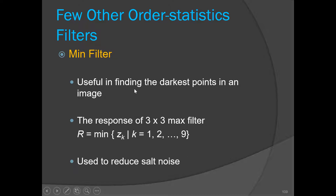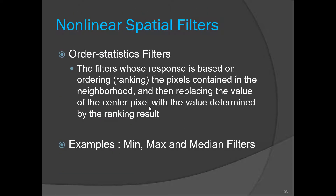Similar to the max filter, we have the minimum filter. The response function is similar, except here we find the minimum value. It is used to reduce the salt noise. So today we have studied order statistic filters that come under nonlinear filters, and we have studied three types: min, max, and median filters. They are extremely powerful in reducing impulse noise, also known as salt-and-pepper noise.